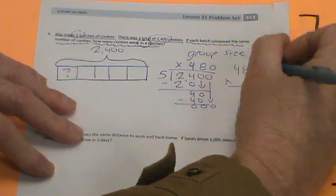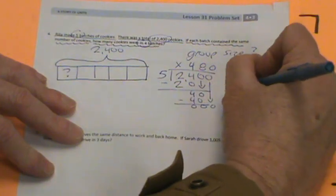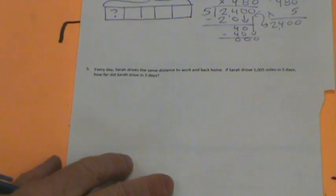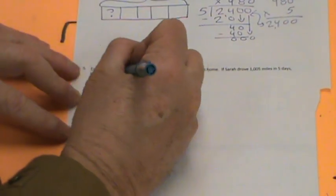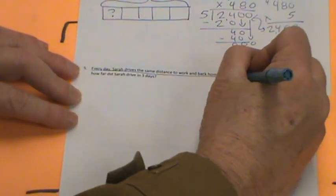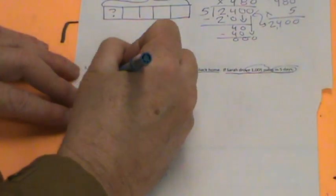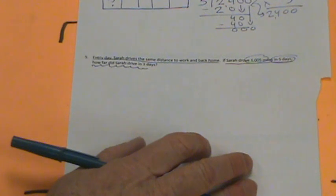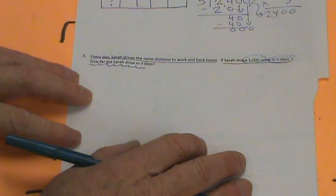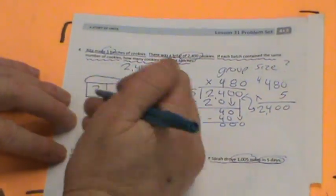Let's do the multiplication to check. 480 times five. Zero times five is zero. Eight times five is 40. Four times five is 20 plus the four is 24. And look, we got it right. Let's go back to this problem. The question was how many cookies were in four batches.